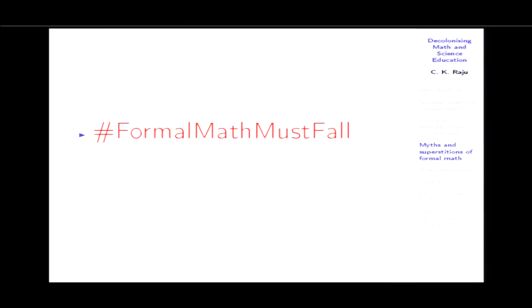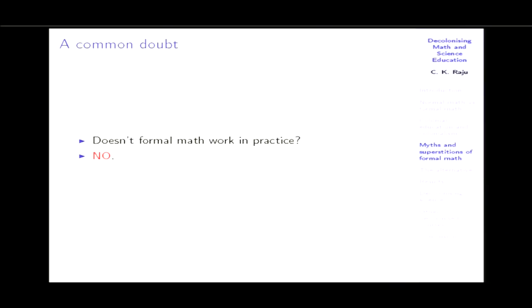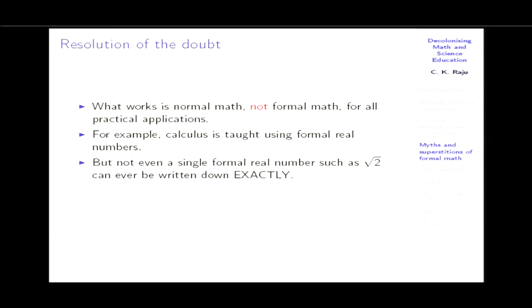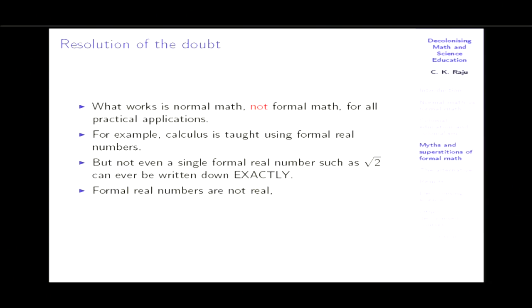So the summary: no Euclid, no deductive proofs in the Elements. Deductive proofs are fallible. Anti-empirical deductive postulates can be used to prove anything predetermined by authority. All postulates underlying formal mathematics are metaphysical and cannot be empirically verified. Two-valued logic is neither culturally universal nor empirically certain. That's why I have the thesis: formal math must fall. Does formal math work? Only if you don't know formal math. It does not work for practical applications. For example, with calculus as taught using formal real numbers and limits, you cannot write down a single formal real number like √2 exactly — you can only write it approximately, and then it's not a formal real number.